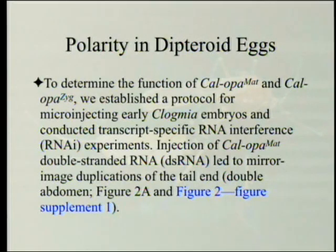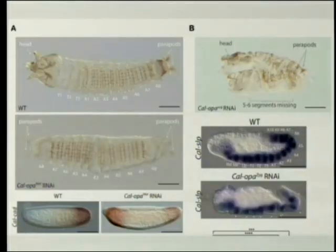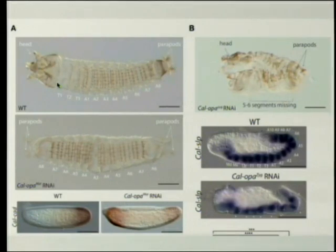To determine the function of CalOpa-maternal and CalOpa-zygote, the researchers established a protocol for microinjecting early Clogmia embryos and conducted transcript-specific RNA interference experiments. Injection of CalOpa-maternal double-stranded RNA led to mirror-image duplications of the tail end — if you get rid of that, you have two tail ends and no head. Here's the wild type with a head developing and a tail, and you can see the difference. This one has two tails.